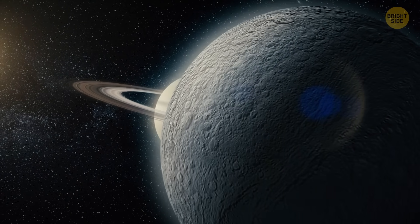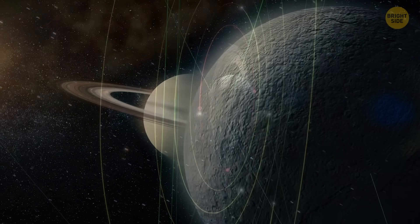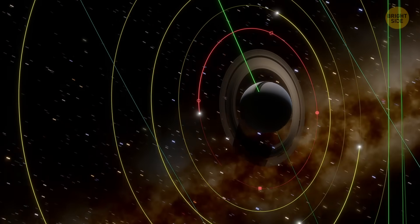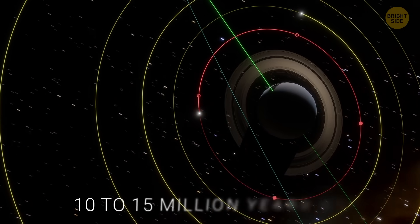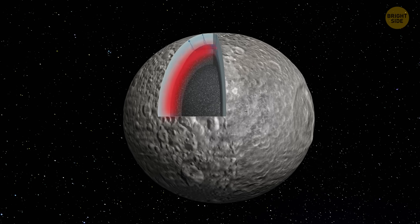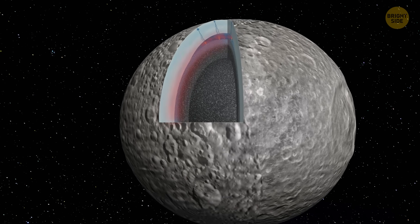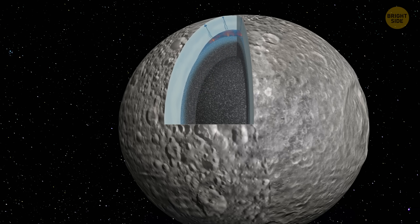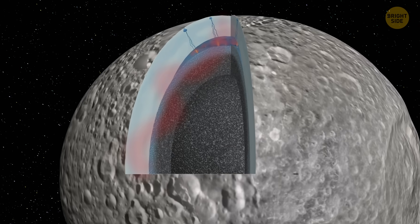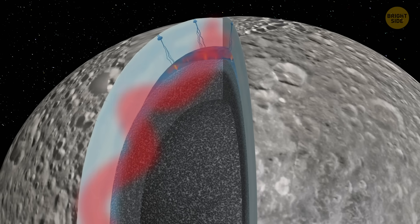So basically, Mimas is in its warm, ocean-having phase right now. Computer models show that the orbital change probably happened just 10 to 15 million years ago. That's nothing in space-time. It also turned out that the heat on Mimas doesn't move in a simple straight line. It kind of loops and twists, depending on how thick the ice is. Which means, finding this ocean won't be easy. But it's not impossible.